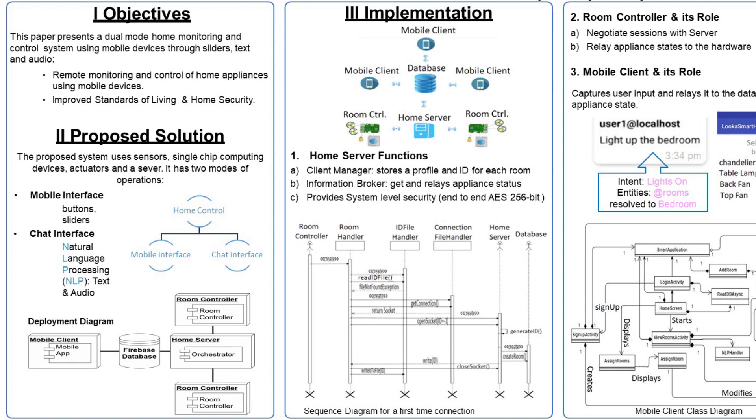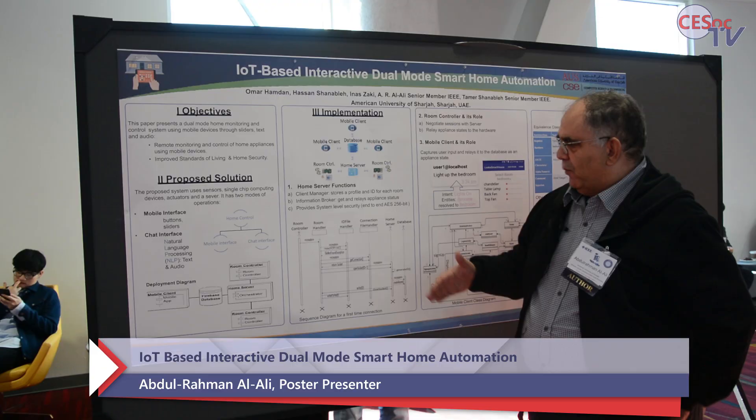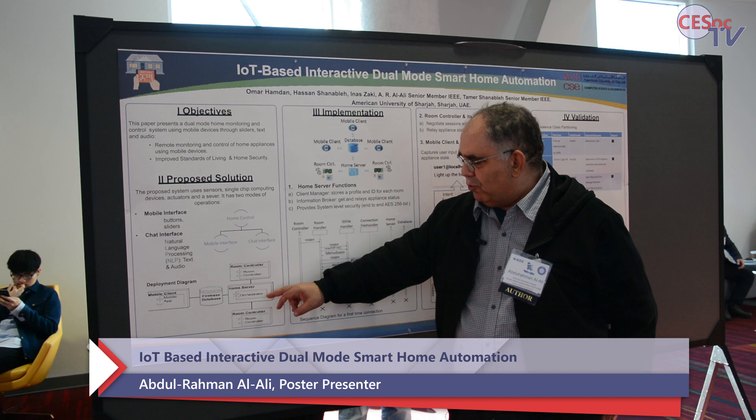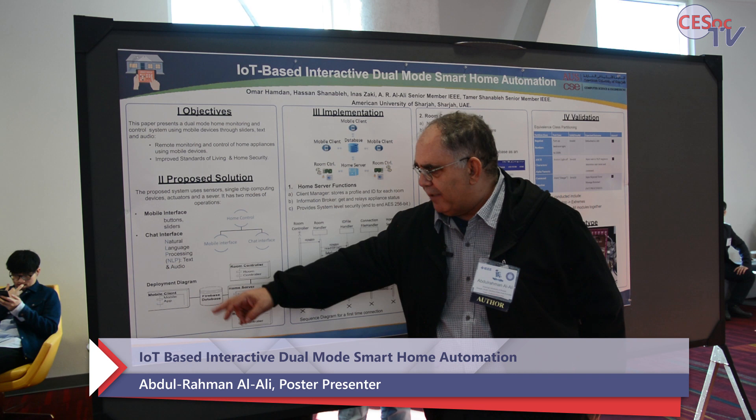The user can issue commands like turn the light on or off, or use a button or slider to control the home appliances. The system architecture consists of room controllers in each room connected to the devices and appliances, a home server, a Firebase database, and a mobile client.